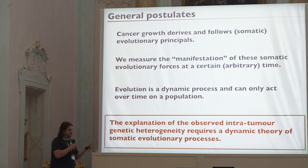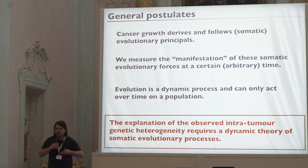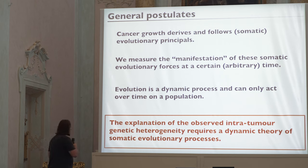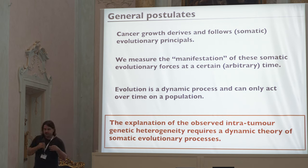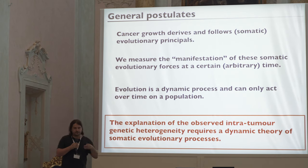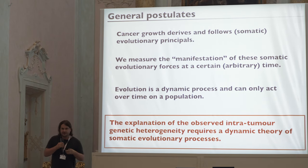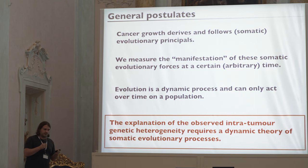Cancer is caused and driven by a somatic evolutionary process. When we observe data, we measure the manifestation of this process at a certain time in the tumor's evolutionary history. Evolution occurs over time, so to describe these patterns we need a dynamic theory that not only describes what we see but also explains how these patterns arose during the tumor's evolutionary process.